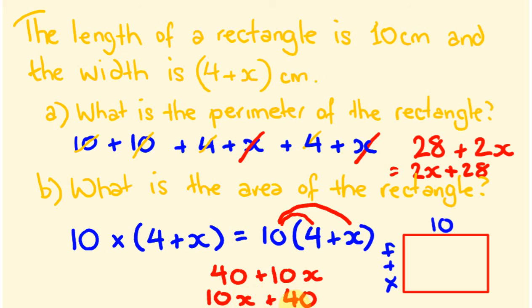Don't worry if that last step threw you a little — we'll look at it in the next video, titled 'Expanding Two Factors'. To check: let x equal 2, so 10 times 4 plus 2 is 10 times 6, giving an area of 60 cm². Using our expression: 10 times 2 is 20, plus 40 is 60. You can always check your answers by substituting values. Hopefully that was helpful — see you in the next video!